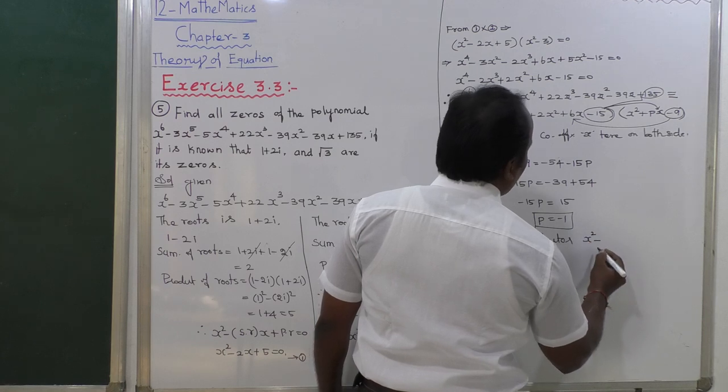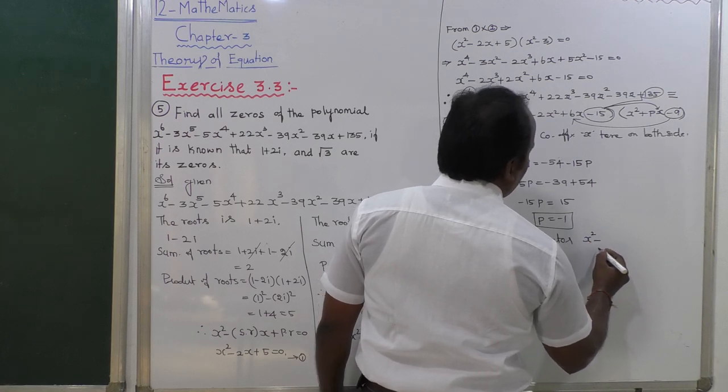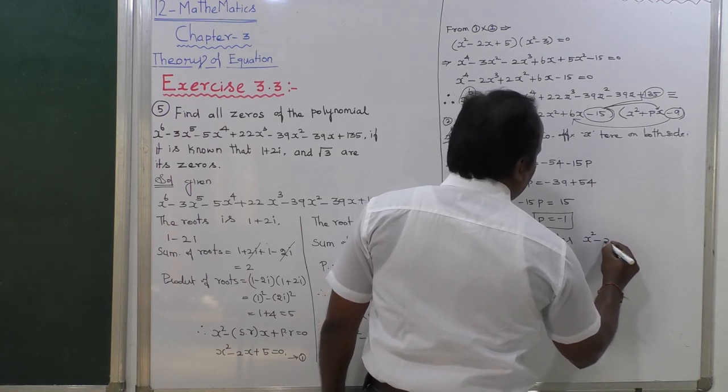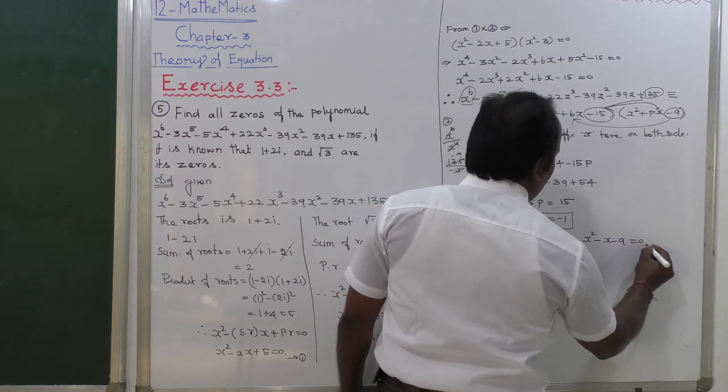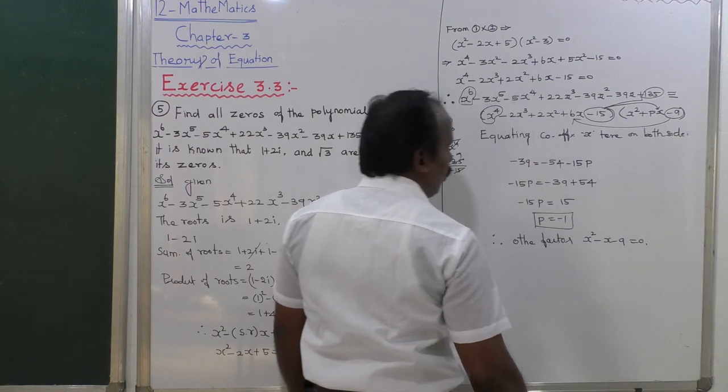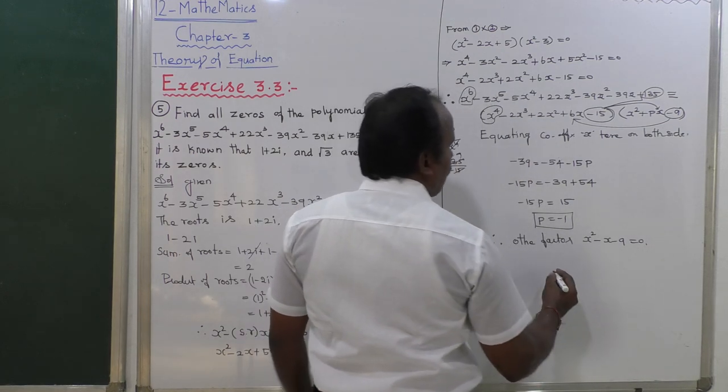The other factor is x square minus x minus 9 equals 0, where a equals 1, b equals minus 1, c equals minus 9.